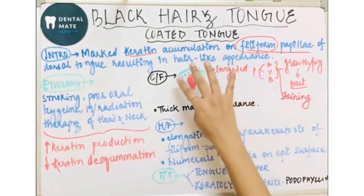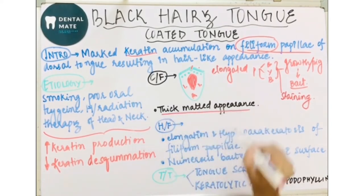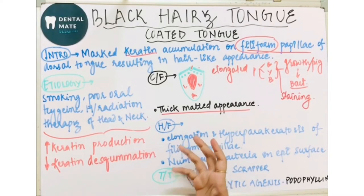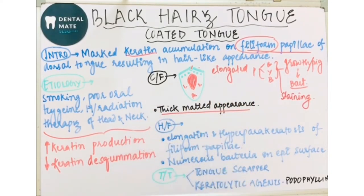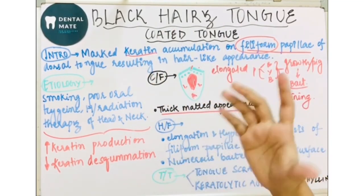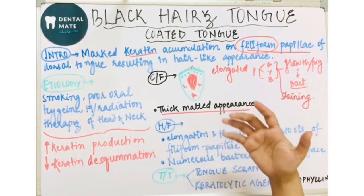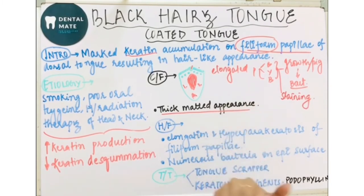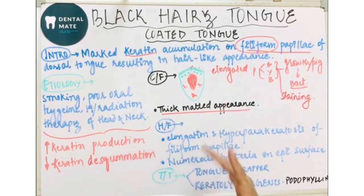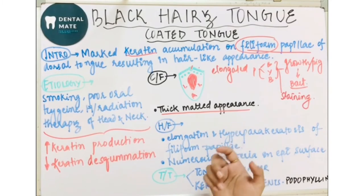If most of the tongue is involved, if a lot of the lateral and interior areas are affected, then a thick matted appearance is seen. Remember, in black hairy tongue, with the help of a probe or periodontal instruments, we can elevate the multiple individual elongated filiform papillae. This condition is mostly asymptomatic, but sometimes patients can complain of bad taste in the mouth or a gagging sensation.